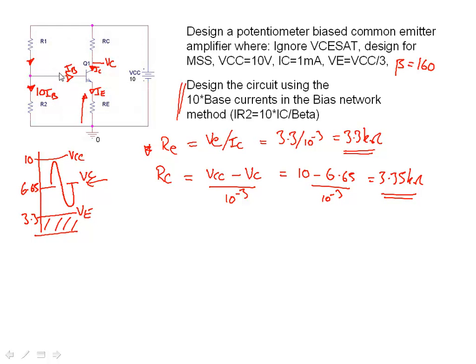We know Kirchhoff's current law, so the sum of the current in equals the sum of the current out. We've got one base current into the base, we've got 10 base currents down here, 10 down there, one down there—we need 11 base currents here, and that gives us a reasonable bias.